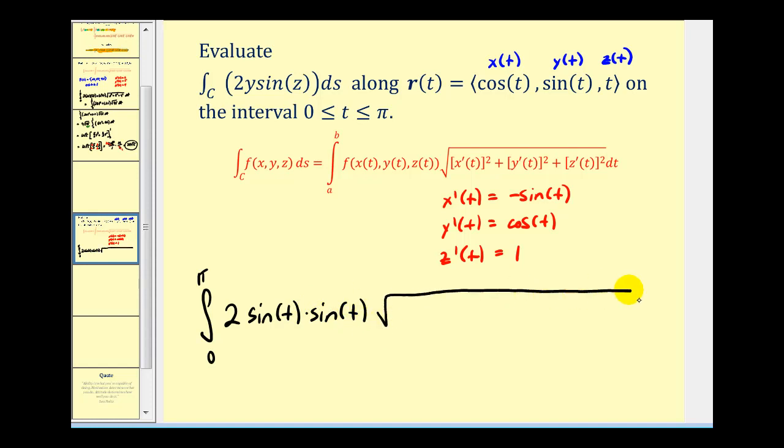And we're going to have the magnitude of r prime of t, so we'll have sine squared t plus cosine squared t plus one squared, or just one. So let's take a look at this square root here. Well, all of this is equal to one, so this becomes the square root of two. Let's go ahead and factor out the square root of two. And we'll write this as two sine squared t, dt.